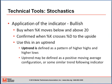Application of the indicator in a bullish sense. In its most pure sense, one wants to buy when %K moves below and then above the 20 level on the stochastic oscillator chart. The confirmation that it's a good buy signal is when %K then crosses %D to the upside. One must use this methodology in an uptrend only, i.e. when the market is making a pattern of higher highs and higher lows.